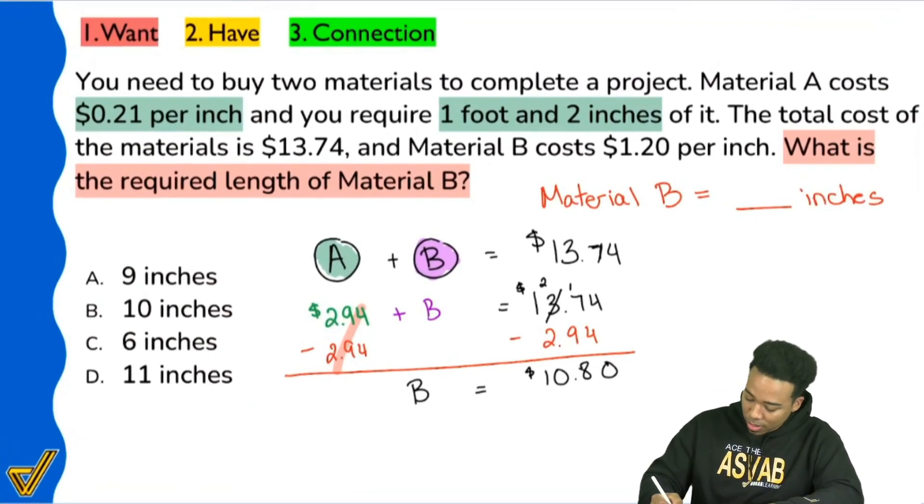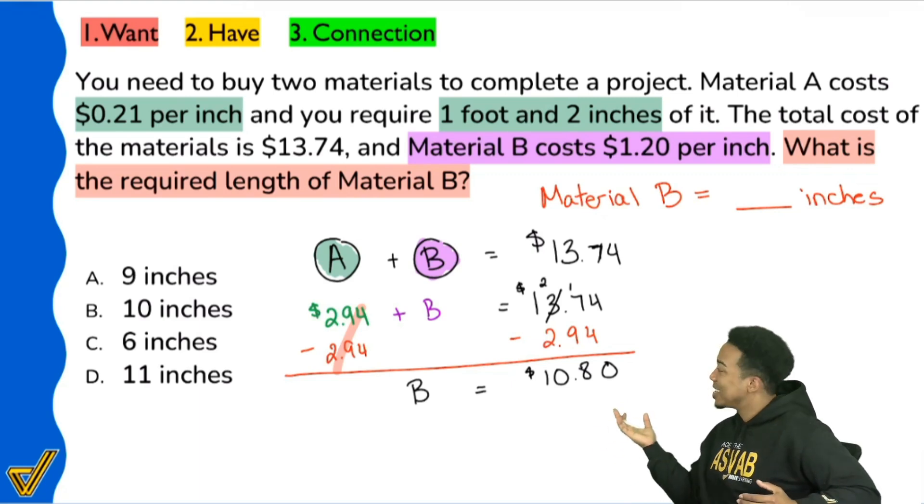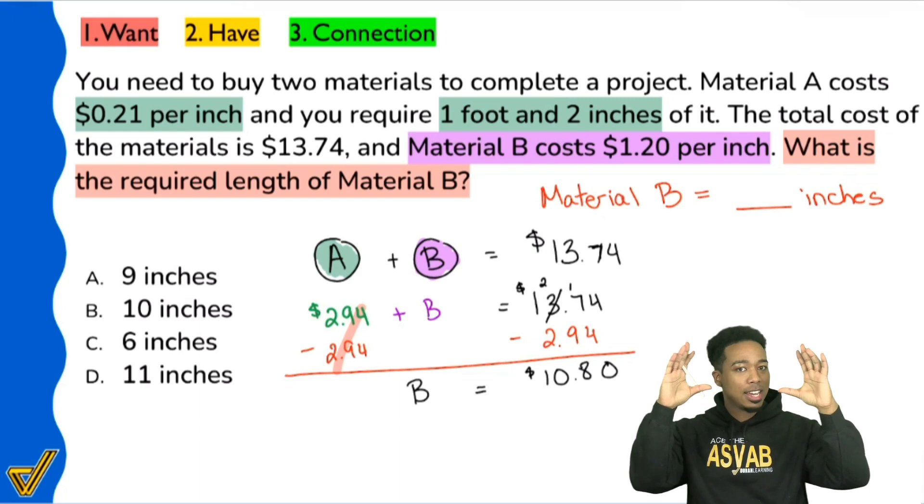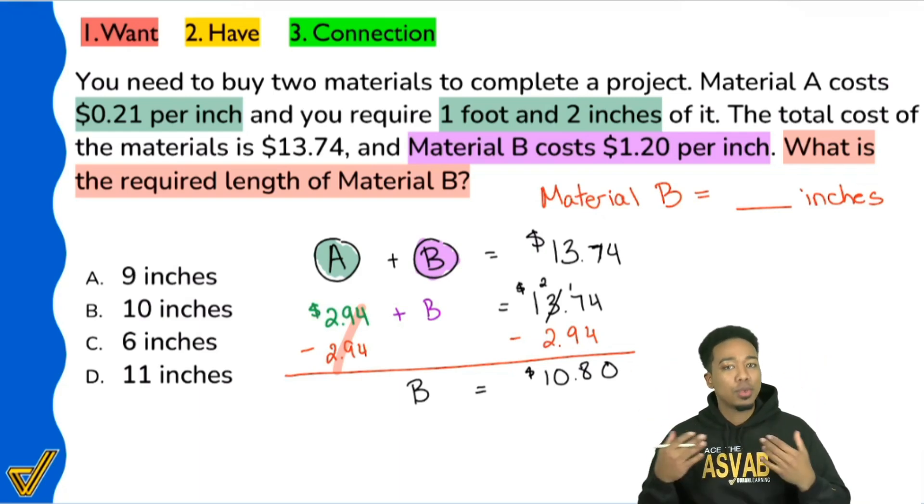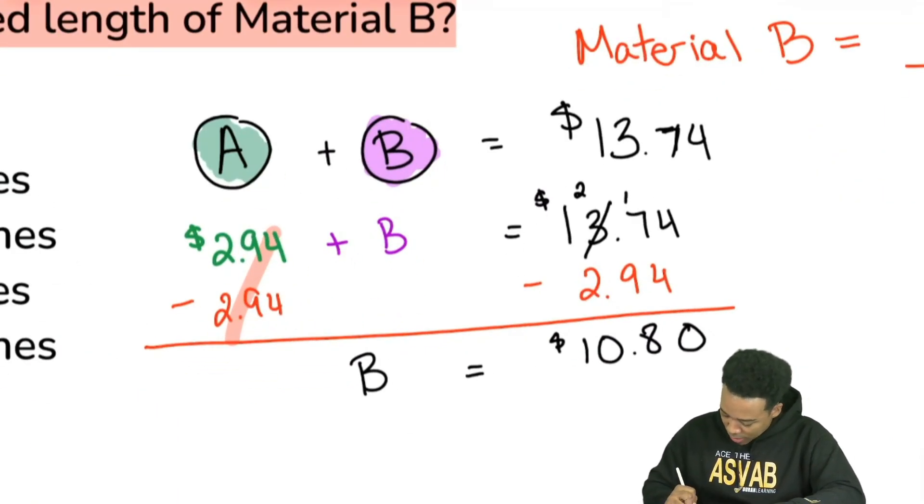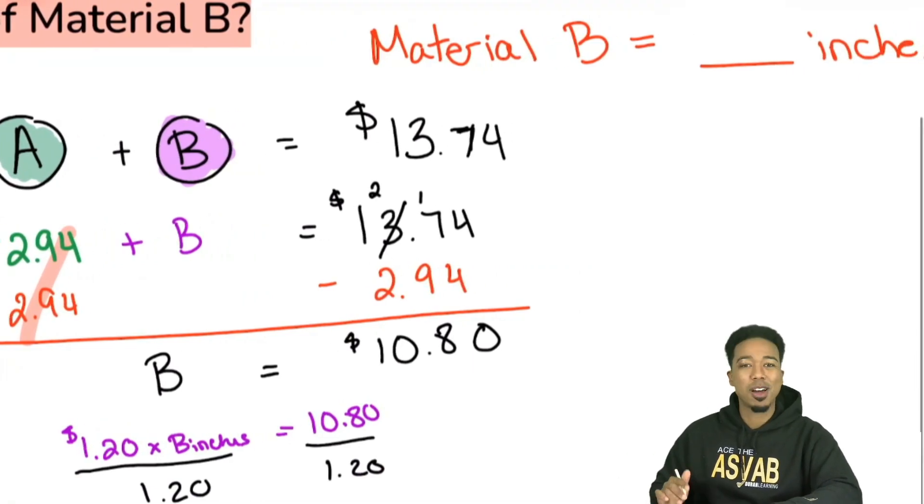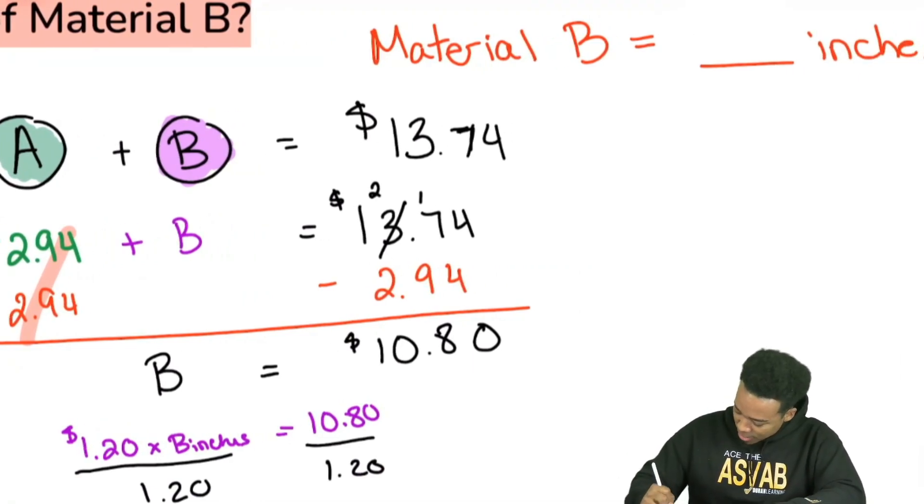Now this is extremely useful because what we're going to do next is notice that we were given the cost of B. We're told that material B is $1.20 per inch. So since material B is $1.20 per inch, and our total cost is $10.80, what we can do is divide. We have the total cost of B, 10.80, we divide that by $1.20. If we do that, we'll see how many inches because it's $1.20 per inch. So we can say that $1.20 times the inches for B, that's going to give us $10.80. So we divide both sides by $1.20.